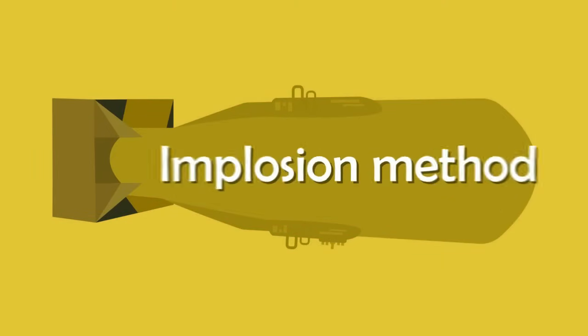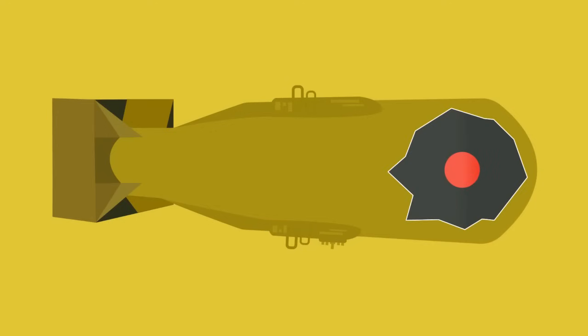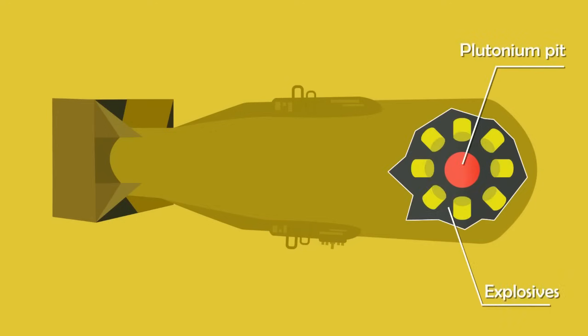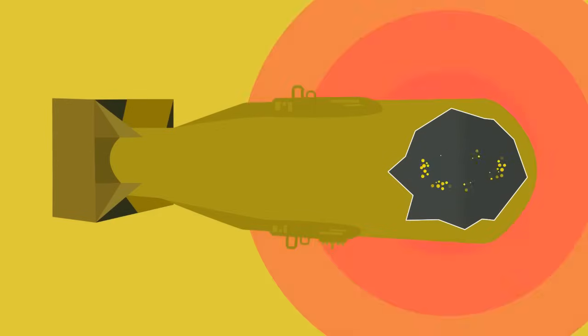The second approach is the implosion method. In this approach, the nuclear fuel is shaped into a sphere called the pit, and the explosives are placed around it. When these explosives are detonated, the force squeezes the pit and the explosion takes place.